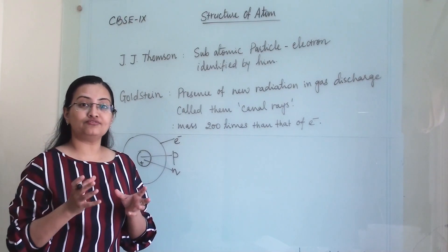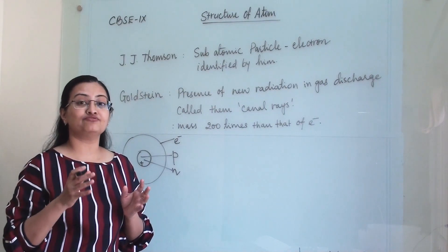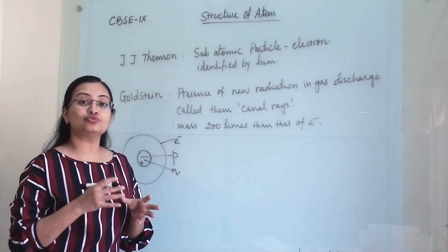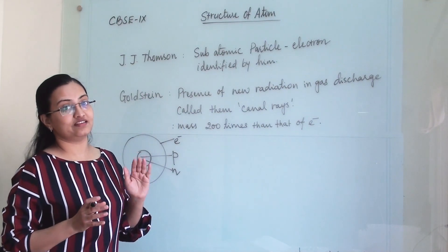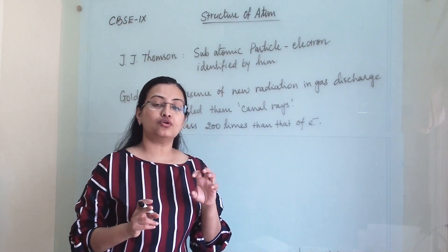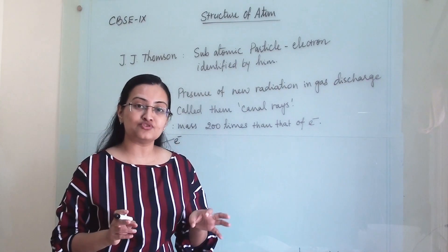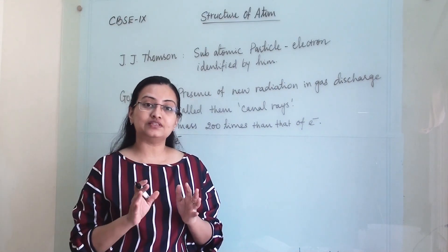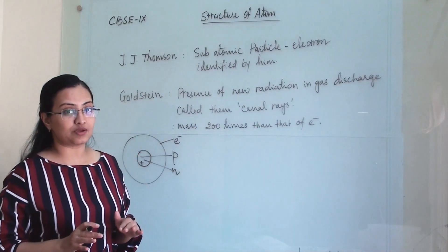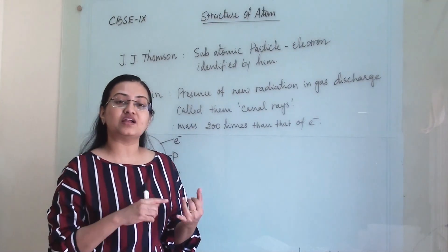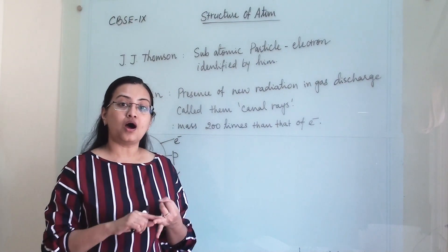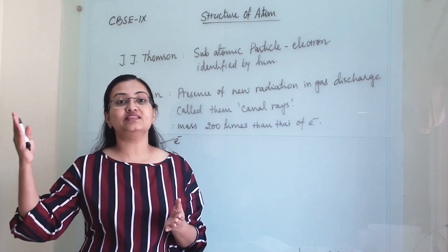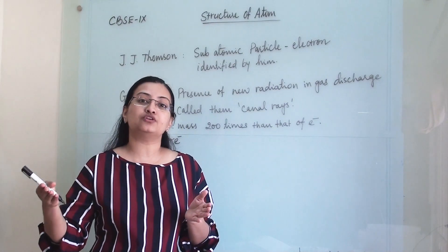Those models failed because they did not hold true for some speculations and experiments. We are going to go through all those details, study all the proposed models, and simultaneously discuss their drawbacks and assumptions, and why those models failed. Later on, we will also see how we determine the valency of an atom, how atoms tend to become stable by forming bonds and making compounds.